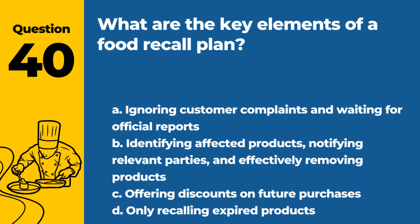Question 40. What are the key elements of a food recall plan? A. Ignoring customer complaints and waiting for official reports. B. Identifying affected products, notifying relevant parties, and effectively removing products. C. Offering discounts on future purchases. D. Only recalling expired products. Answer: B. The key elements of a food recall plan include identifying the affected products, notifying relevant parties such as authorities and consumers, and effectively removing the products from distribution and sale.